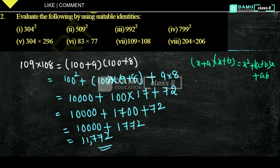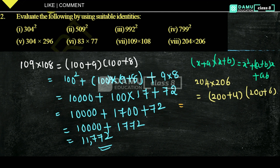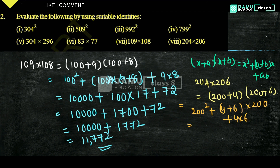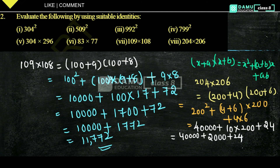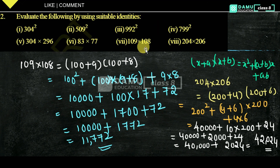Our next one is 204 into 206. Here also we write it as (200 plus 4) into (200 plus 6). Using the x plus a into x plus b formula: 200² plus (4 plus 6) into 200 plus 4 into 6. That is 40,000 plus 10 into 200 plus 24, which is 40,000 plus 2,000 plus 24, equaling 40,000 plus 2,024 = 42,024. So 42,024 is the answer. Thanks for watching, please subscribe.